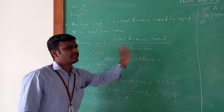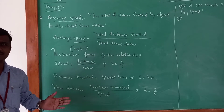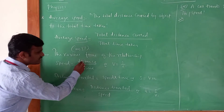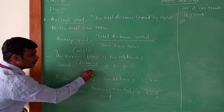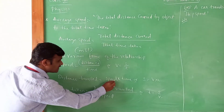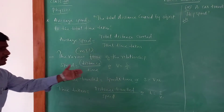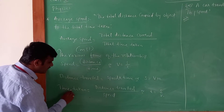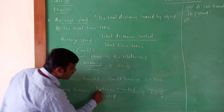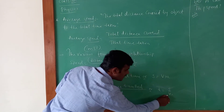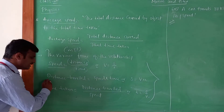Speed equals distance by time. Substituting: speed = 88 / 1.5. To simplify, multiply both numerator and denominator by 10: we get 880 / 15. Now divide 880 by 15. We get 58.66. So the speed is 58.66 kilometre per hour — because the distance was in kilometres and time in hours.